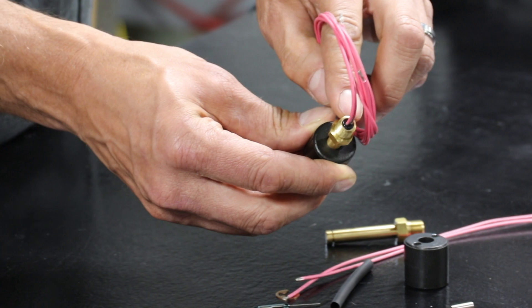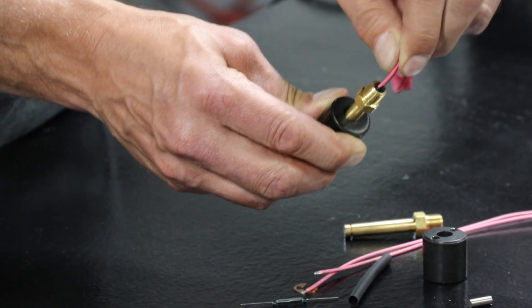We use epoxy to hold the wires in so that they don't pull out, and that is how a float switch works.